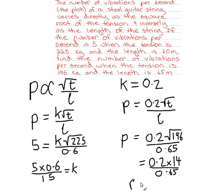So P is, let's just rattle it in the calculator, 0.2 times 14 divided by 0.65. And that's 4.3 vibrations per second, rounded to one decimal place.